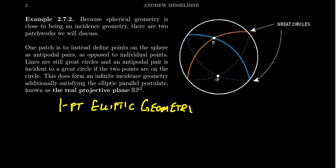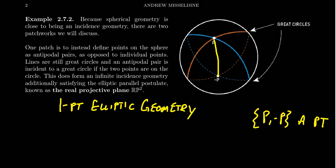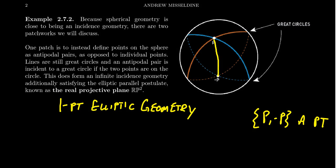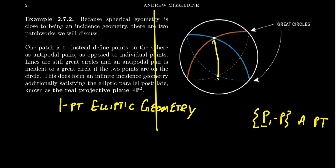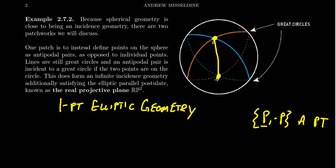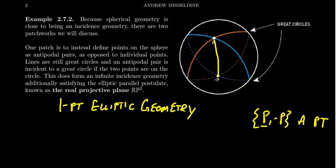We actually consider these two antipodal points to be the same thing. This might seem counterintuitive at first, because you're saying points are actually pairs of points — a point actually has the form {P, −P}. I'm not saying that P is a projective point; P is a Euclidean point, because this sphere exists inside of R3. P is a point of R3, not a point of the projective plane. Instead, you take the two Euclidean points P and −P and you glue them together — you identify them as a single point.